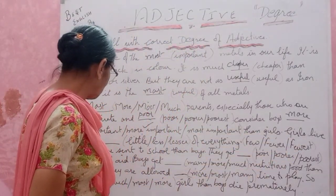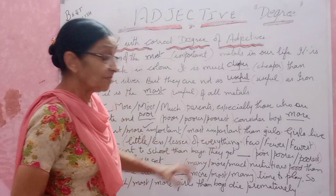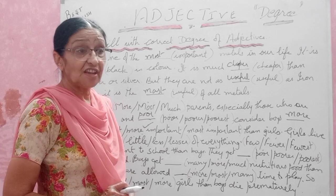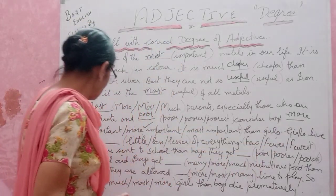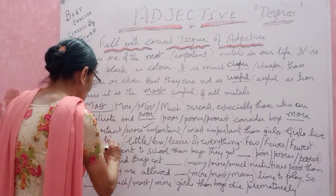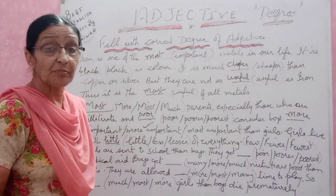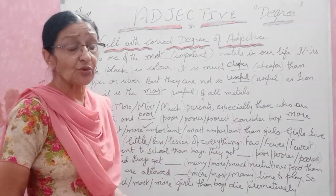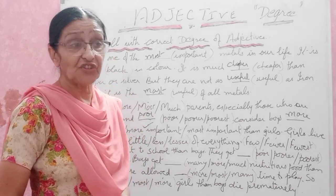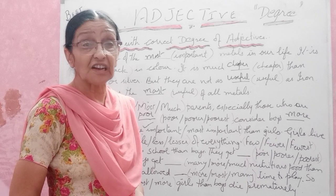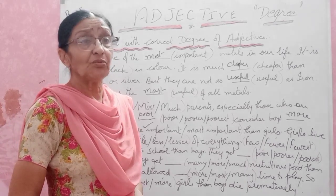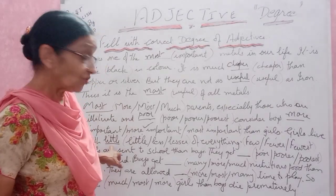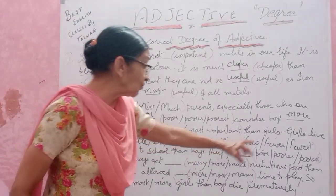Girls live with little, less, lesser of everything. We have seen this in our homes — they prefer boys more. Whatever girls want, they will get little. The options are few, fewer, fewest. Girls are sent to school less than boys, so we see how little they receive of everything.